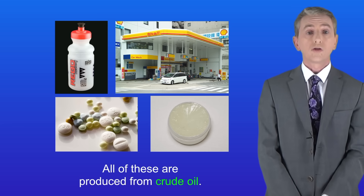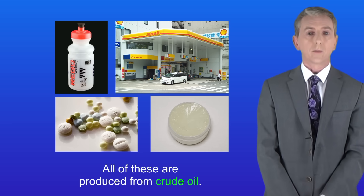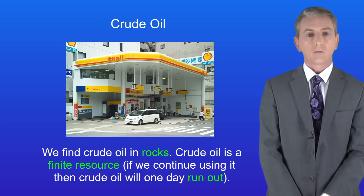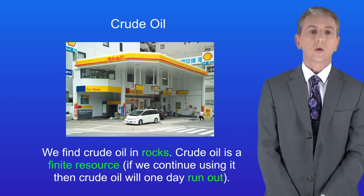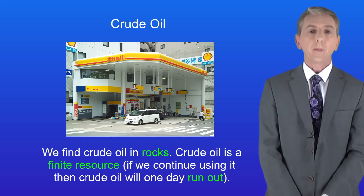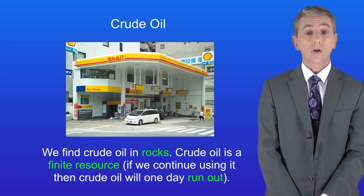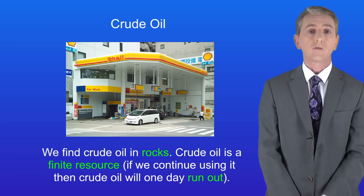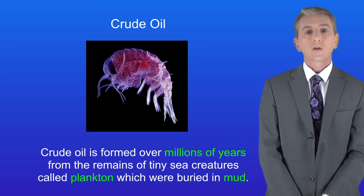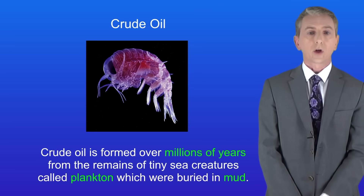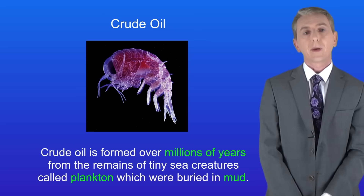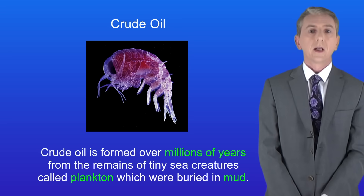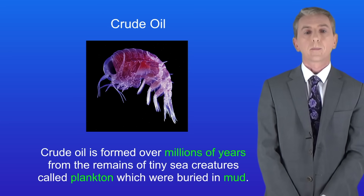We're going to start by looking at how crude oil is formed. We find crude oil in rocks, and crude oil is a finite resource. That means that if we continue using it, crude oil will one day run out. Crude oil is formed over millions of years from the remains of tiny sea creatures called plankton, which were buried in mud. I'm showing you a picture of plankton here.